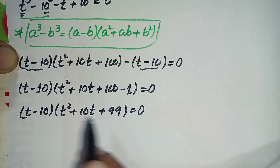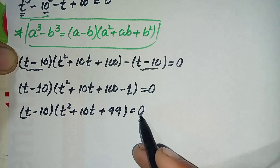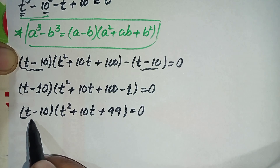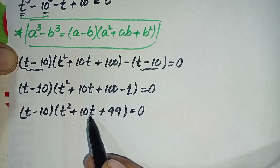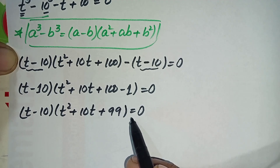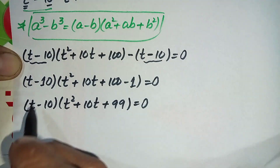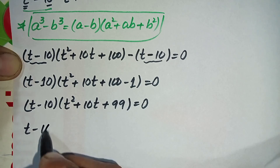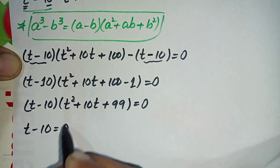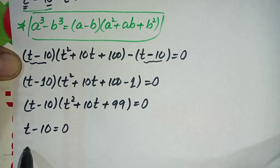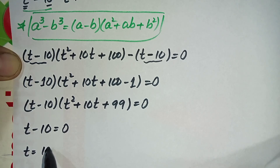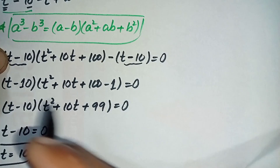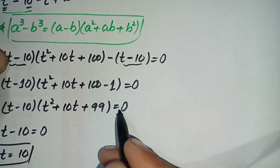Since the product of these two expressions equals zero, there are two cases. Case 1: t - 10 = 0, which gives t = 10. Case 2: take the second expression equal to zero: t² + 10t + 99 = 0.